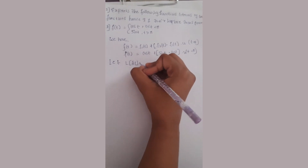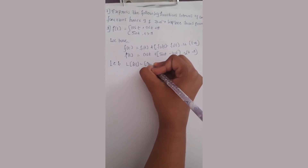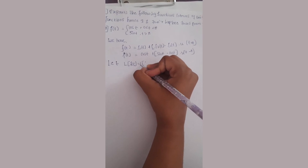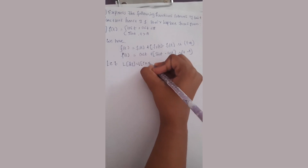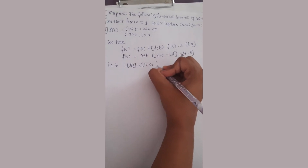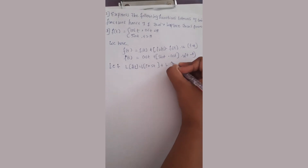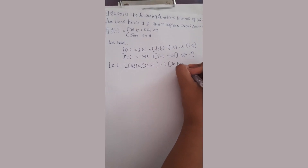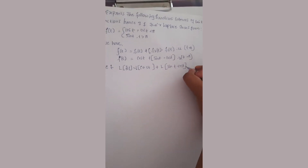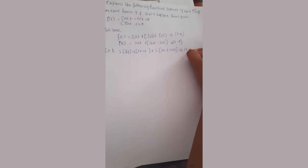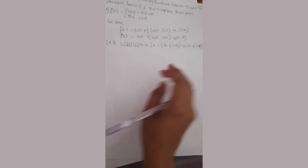Let the Laplace of f of t equal to Laplace of cos(t) plus Laplace of (sin(t) minus cos(t)) into u(t minus pi) — equation 1.